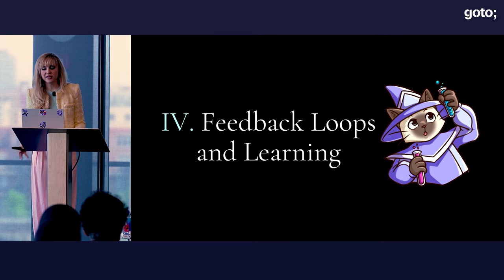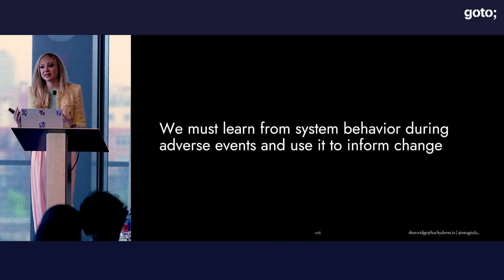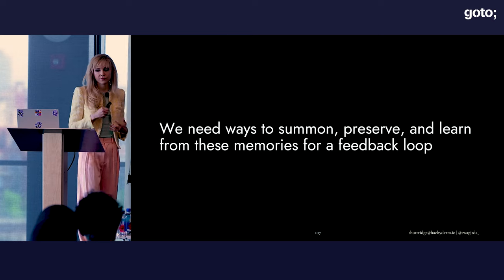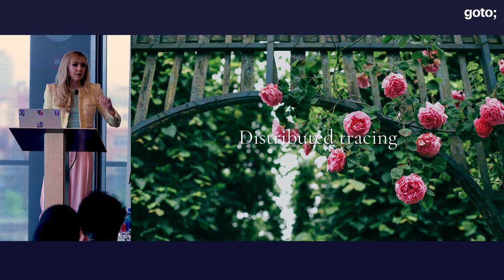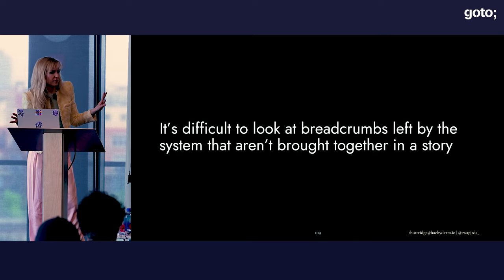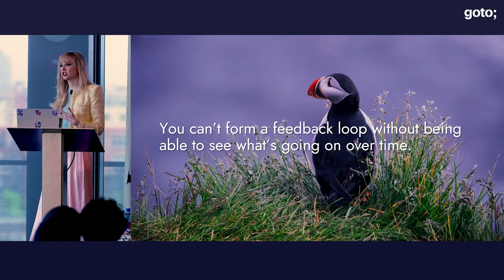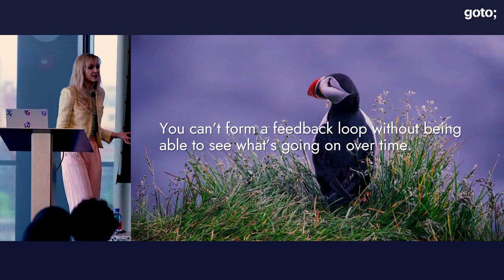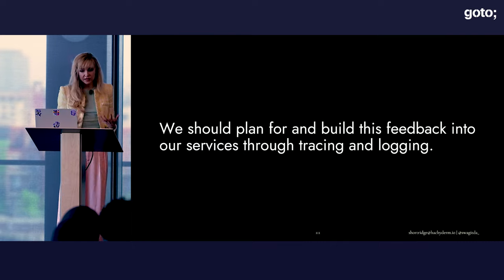Chaos experimentation facilitates learning, and that's precisely the fourth ingredient in our resilience potion: feedback loops and learning. When we remember system behavior in response to stressors and surprises, we can learn from it and use it to inform changes to improve system resilience to those events in the future. We need ways to summon, preserve, and learn from these memories to create a feedback loop when we're developing and delivering. The main opportunity we're going to talk about today is distributed tracing. We should plan for and build this feedback into our services through tracing and logging.